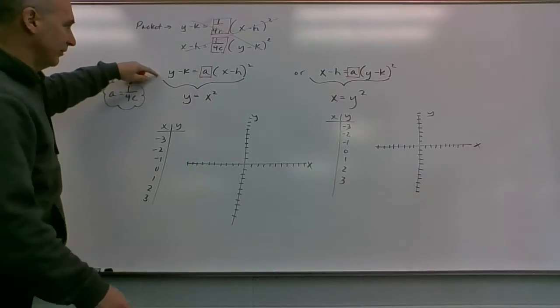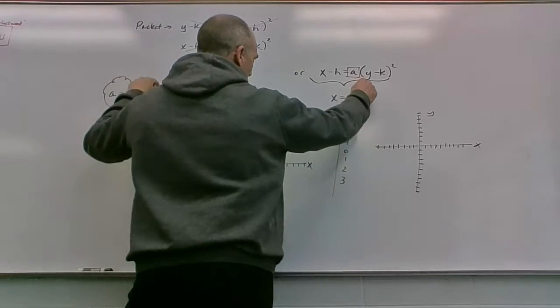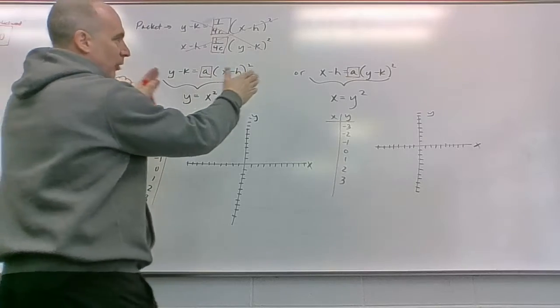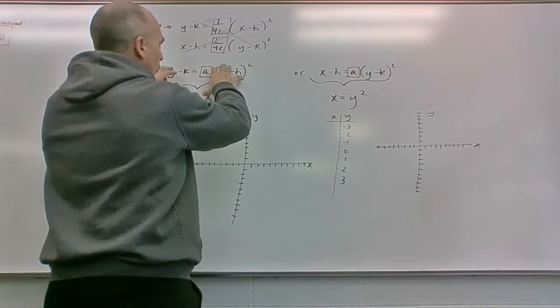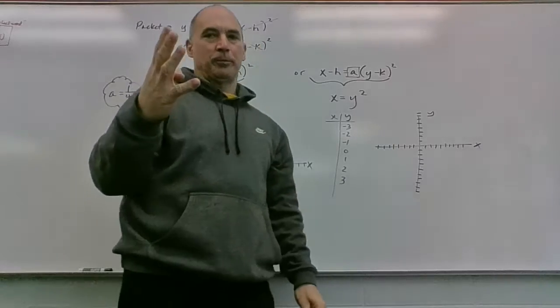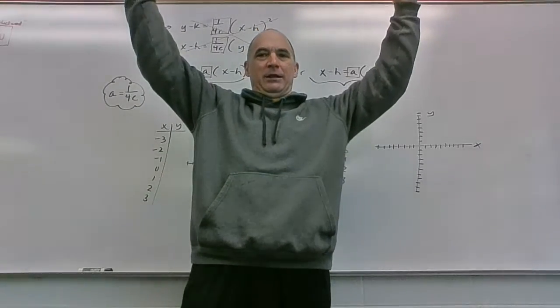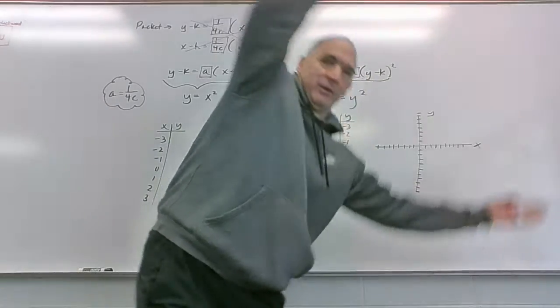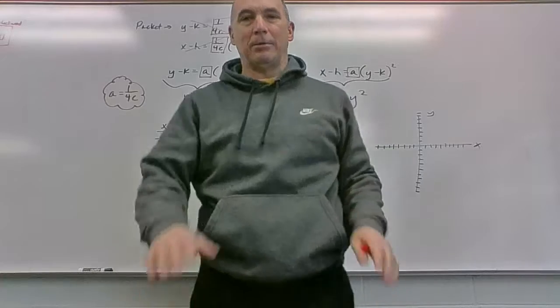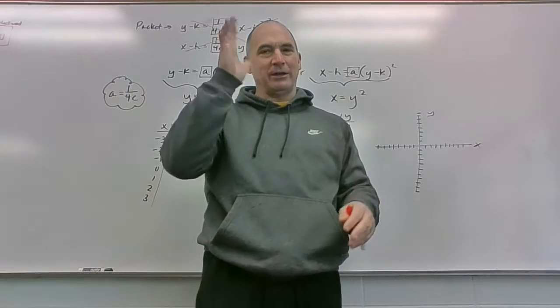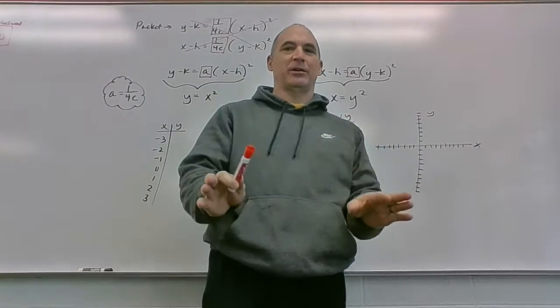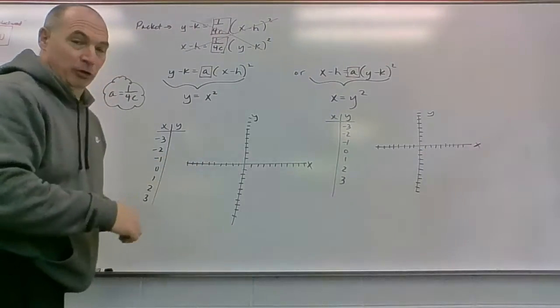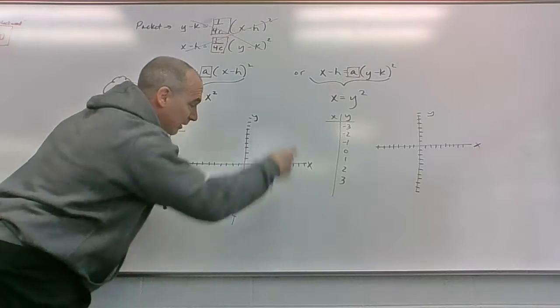All right, so basically what I want you to notice is there's really two kinds, but each kind has two possible ways they could go. So really this could be two ways, this could be two ways. So there's really a total of four parabolas. A parabola could be up like this, it could be down like this, it could be like this, or it could be like that. That's a total of four parabolas.